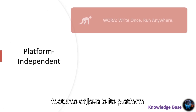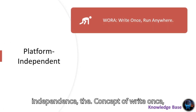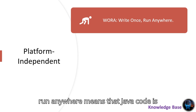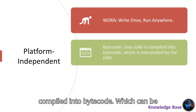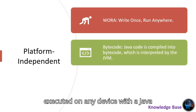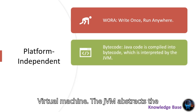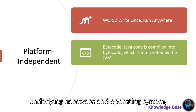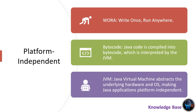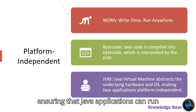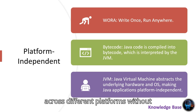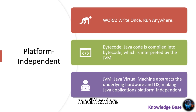One of the most significant features of Java is its platform independence. The concept of write once, run anywhere means that Java code is compiled into bytecode, which can be executed on any device with a Java Virtual Machine. The JVM abstracts the underlying hardware and operating system, ensuring that Java applications can run across different platforms without modification.